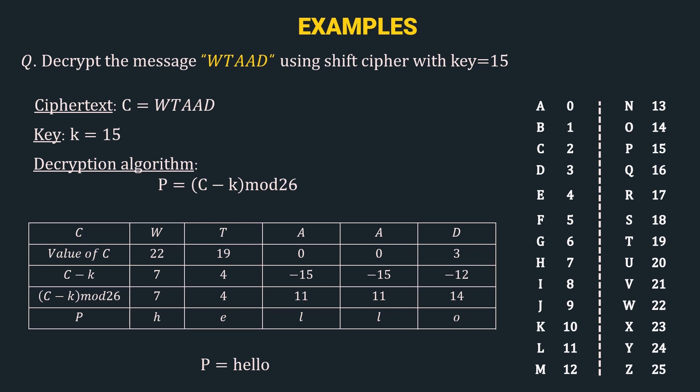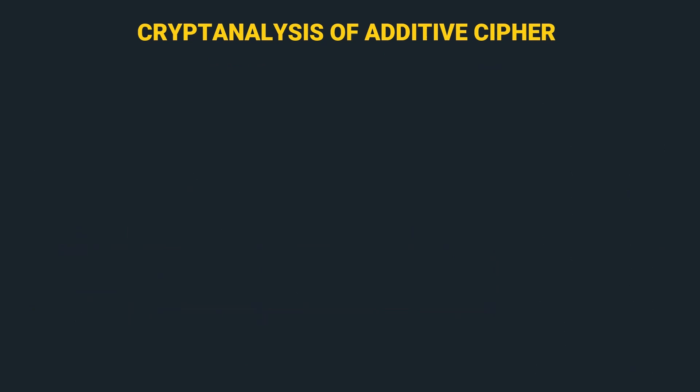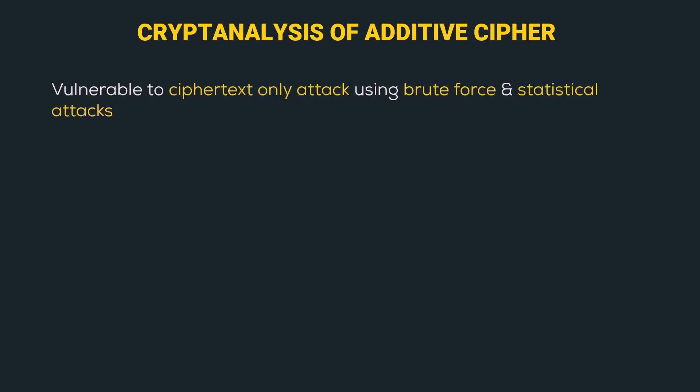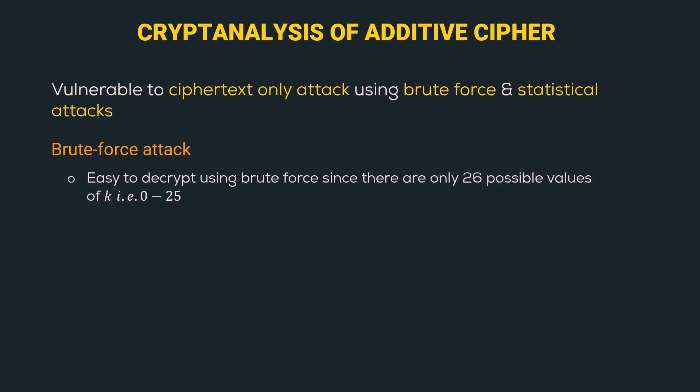Now let's look into the cryptanalysis of additive cipher — in simple language, we will find the loopholes or disadvantages of this cipher. The additive cipher is vulnerable to ciphertext-only attack using brute force and statistical attacks. The additive cipher is easy to decrypt using brute force because there are only 26 possible values for the key K, from 0 to 25. The attacker can start with K = 0, then go to 1, 2, and so on till he gets a sensible plain text. Since the key domain size is only 26, it is pretty easy to crack.